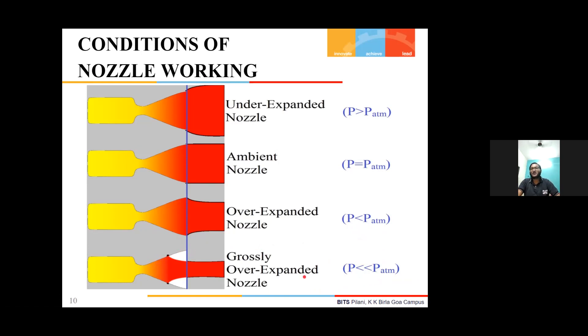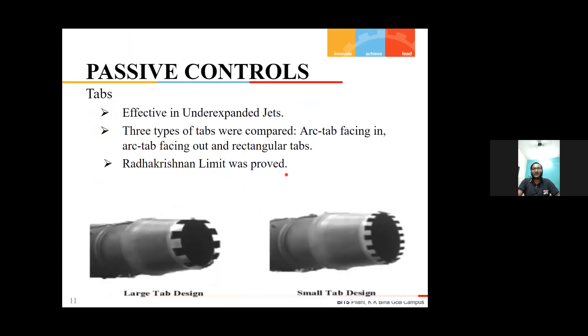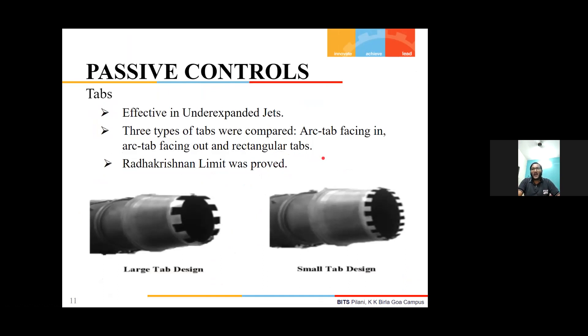Another technique of passive control jet mixing is tabs, which are effective in under-expanded jets. In the experiment, three types of tabs were compared: arc tab facing in, arc tab facing out, and rectangular tabs. The Radhakrishnan limit was also proved, which tells that the tab length is dependent on nozzle radius and not on boundary layer thickness.